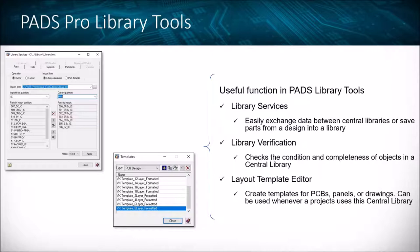There is a starter central library included with PADS Professional. It's a pretty good library to get you started. There's also a free library available for download called the ODA, or Optimum Design Associates, PADS Professional library that includes about 11,000 parts. So you don't have to start with a blank central library — there are starting blocks available, and hopefully today we can build the foundation for creating correct-by-construction parts.